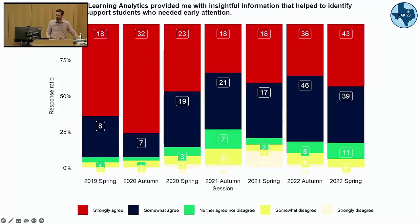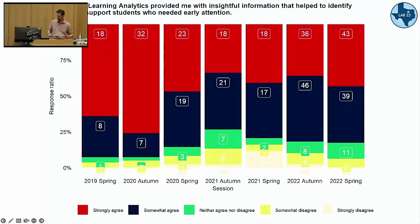Question one is: 'Learning analytics provided me with insightful information that helps to identify and support students who needed early attention.' It uses a five-point Likert scale. When we group together agree and strongly agree, those reports provide useful information, and that result has stabilised over the last couple of years — which is encouraging.